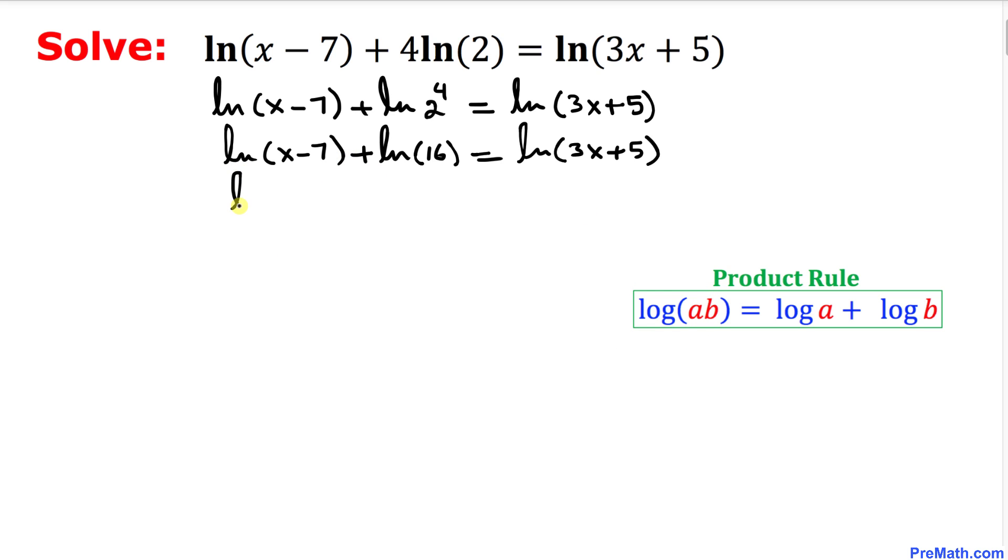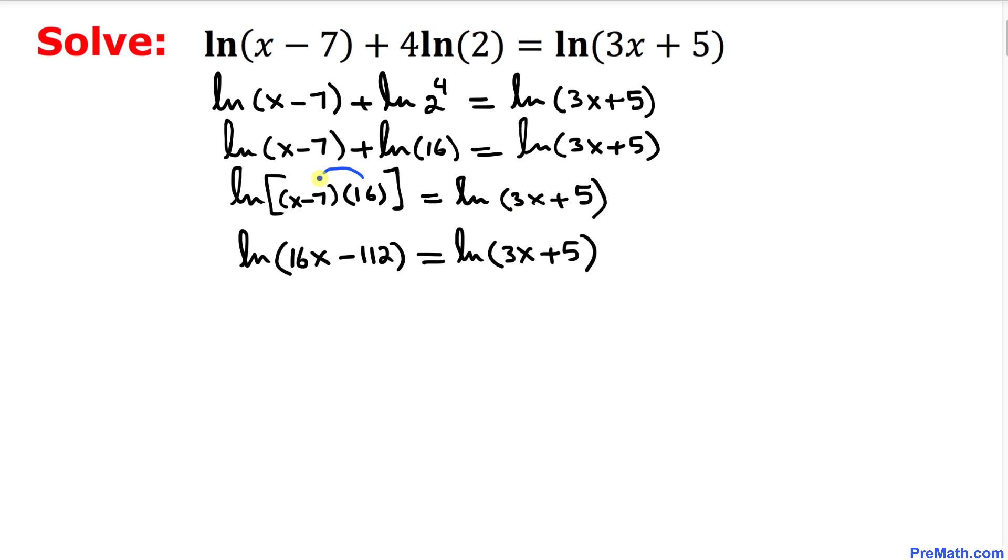This could be written as natural log of x minus 7 times this 16 equal to the natural log of 3x plus 5. In this next step I have used the distribution property and I have got this next equation.